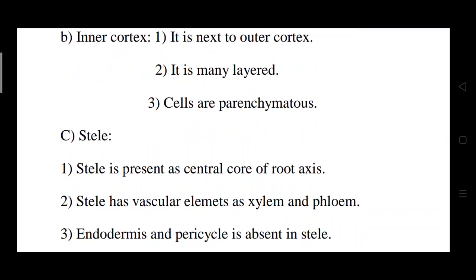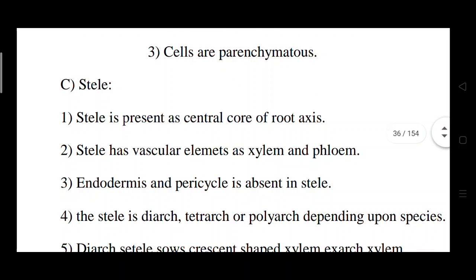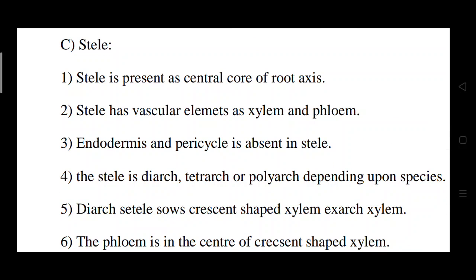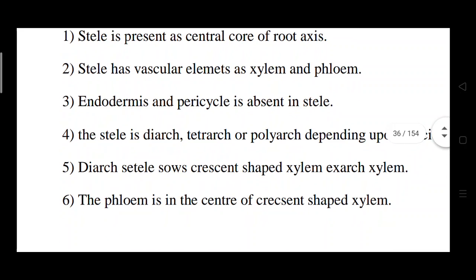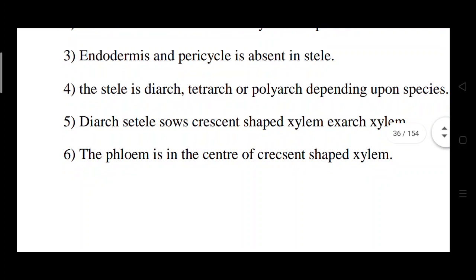The cortex region is followed by the stele. The stele is the central core part of the root axis. In the stele, vascular elements like xylem and phloem are present. Endodermis and pericycle are absent. The stele is diarch, tetrarch, or polyarch depending upon the species. In the diarch stele, a crescent-shaped xylem arrangement is observed, with phloem present at the center and xylem in a crescent shape. Pith is absent.